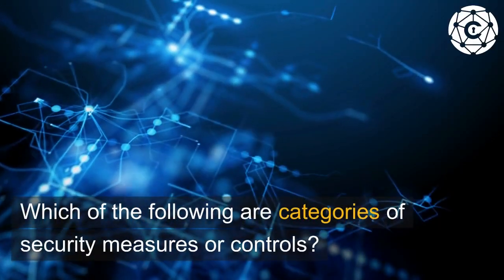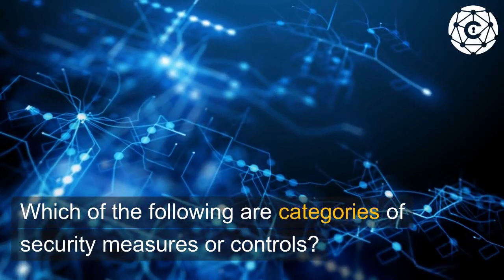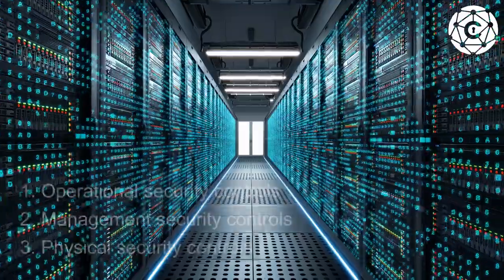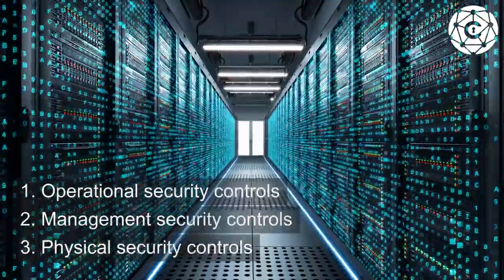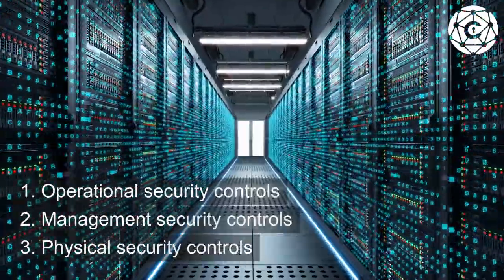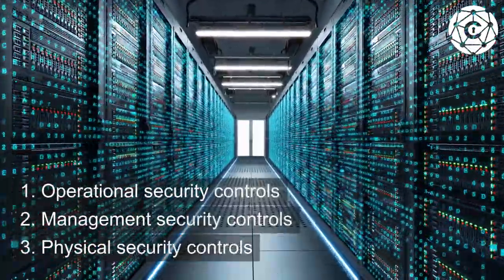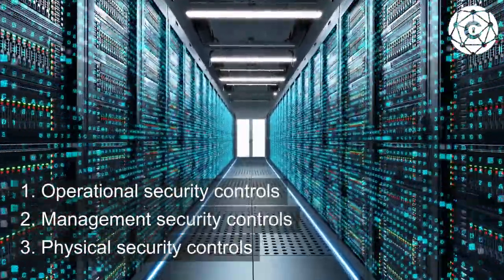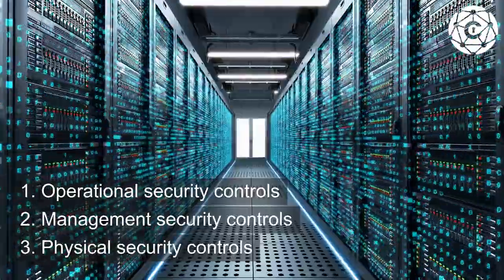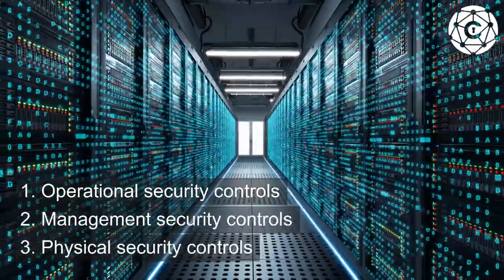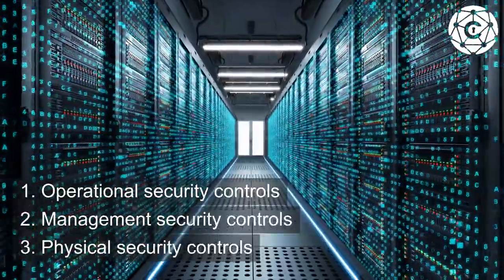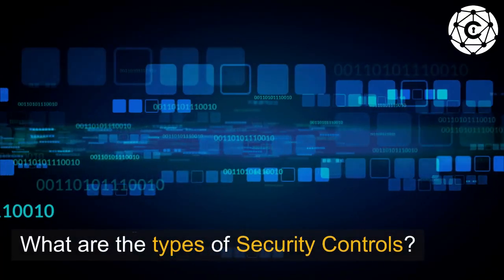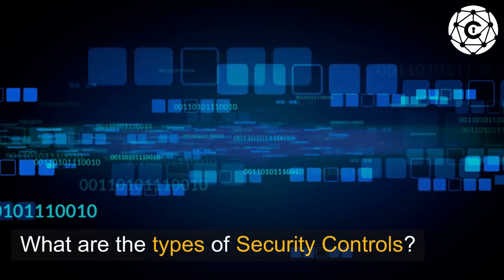Which of the following are categories of security measures or controls? 1. Operational security controls. 2. Management security controls. 3. Physical security controls. What are the types of security controls?